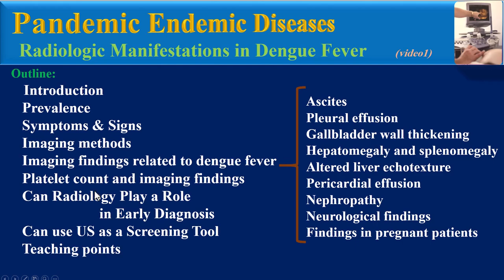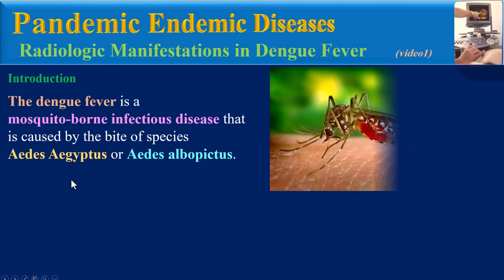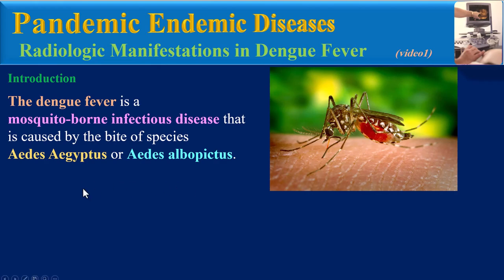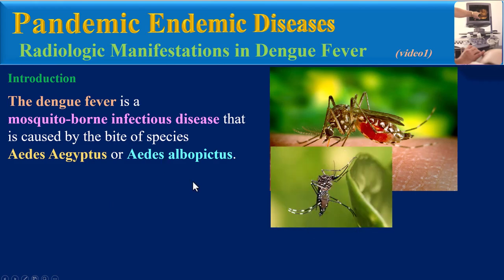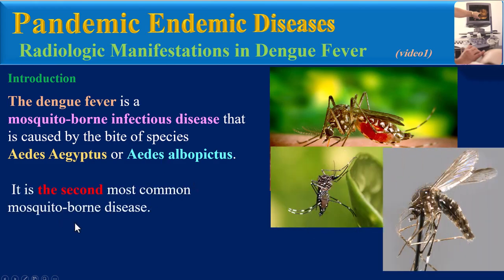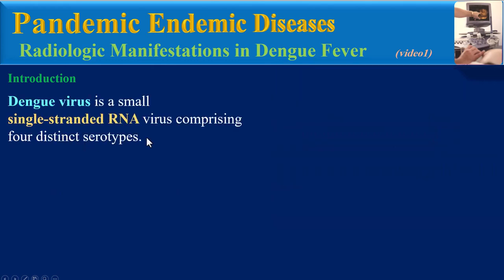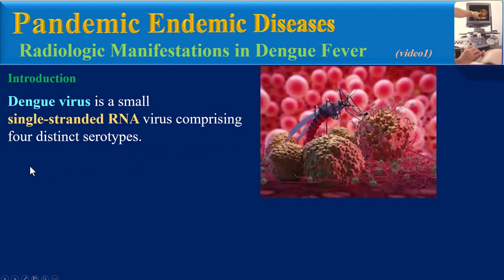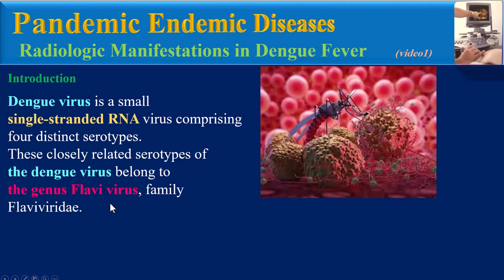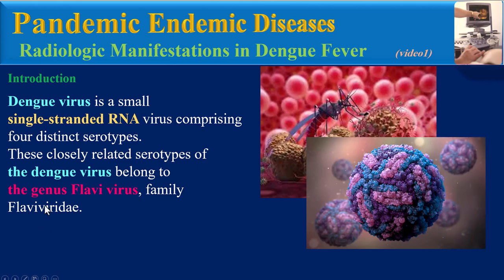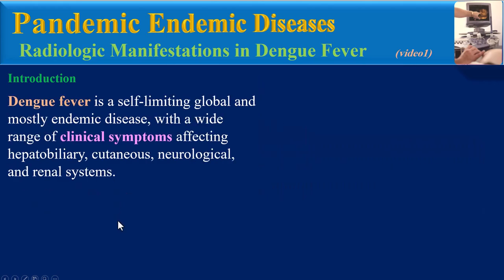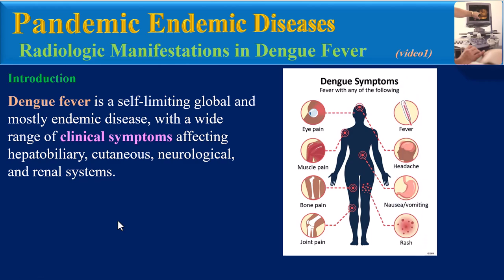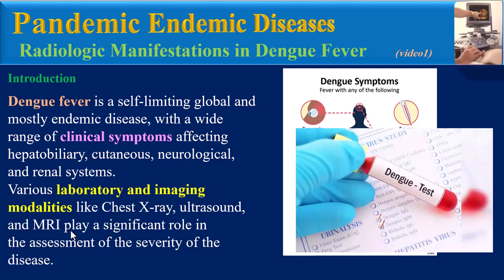Dengue fever is a mosquito-borne infectious disease caused by the bite of Aedes aegypti or Aedes albopictus. It is the second most common mosquito-borne disease. The dengue virus is a small single-strand RNA virus comprising four distinct serotypes, belonging to the genus Flavivirus. Dengue fever is a self-limiting, global, and mostly endemic disease with a wide range of clinical symptoms affecting the hepatobiliary, cutaneous, neurological, and renal systems. Imaging modalities like chest X-ray, ultrasound, and MRI play a significant role in assessing disease severity.